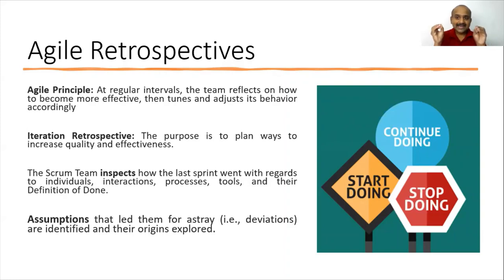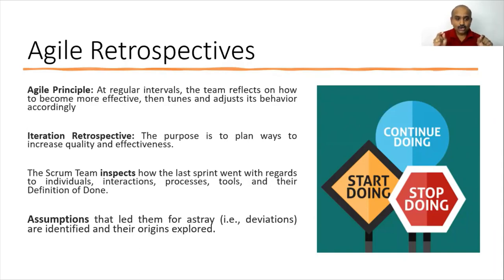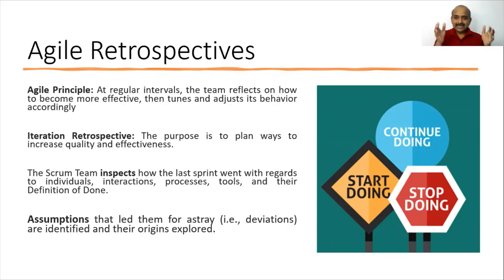Quality and effectiveness are the two key words. This becomes possible when the team reflects on processes, progress, tools, the definition of done of the deliverables, individuals, and interactions.